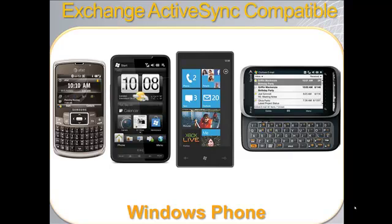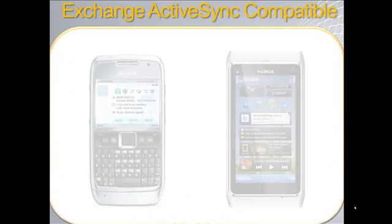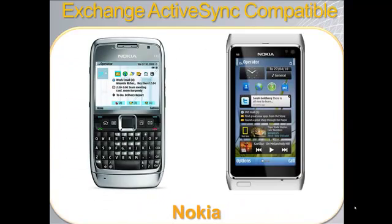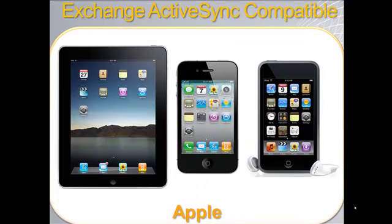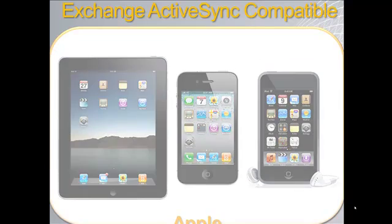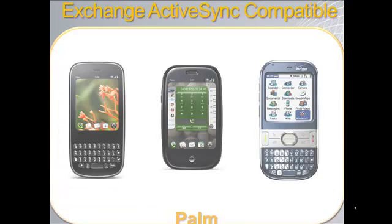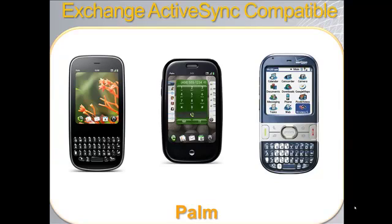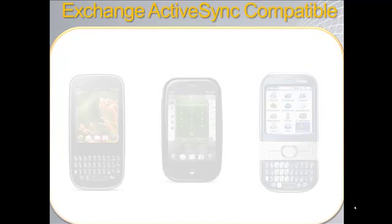Exchange ActiveSync can be found built into devices like Windows Phones, Nokia phones like E and N series devices, Apple iOS devices like the iPhone, iPod Touch, and iPad, and Palm handsets like the Pre, Pixi, Trio, and Centro.